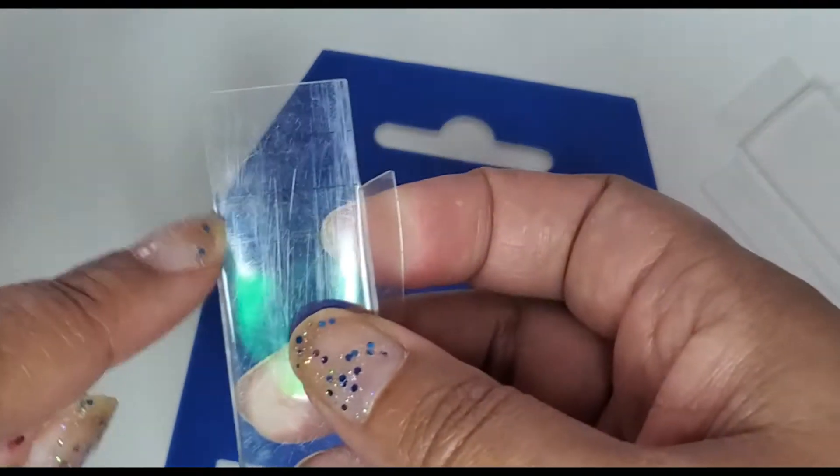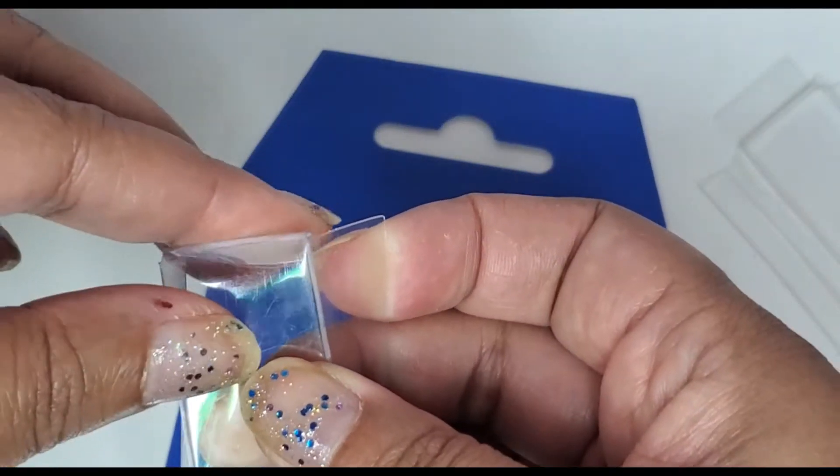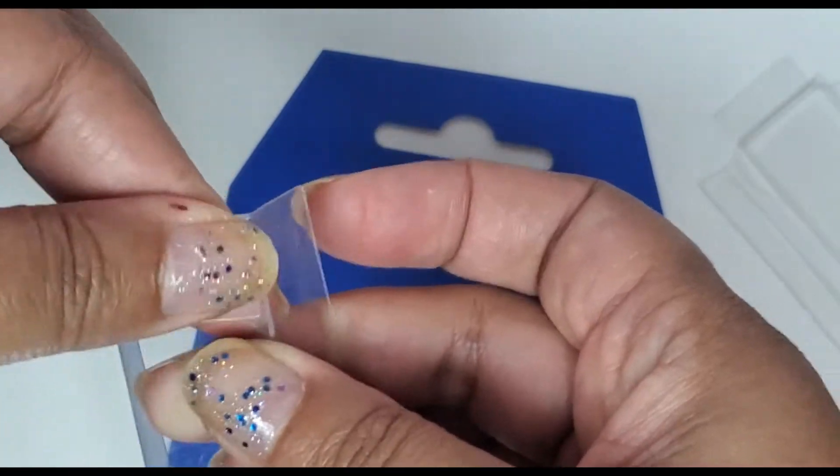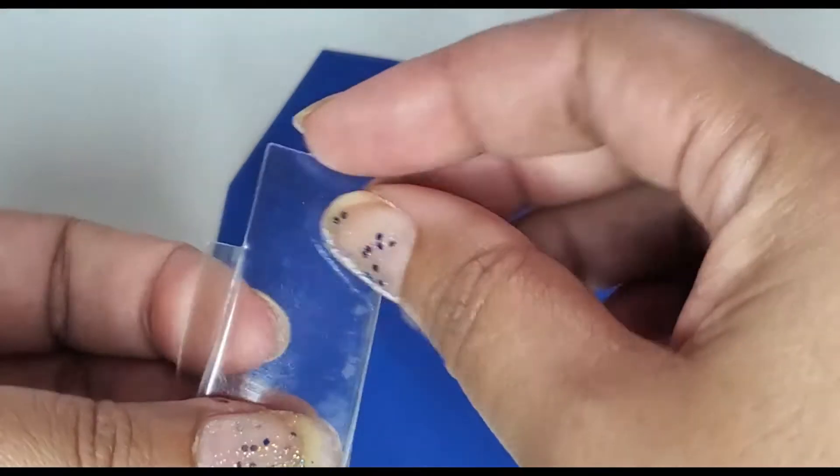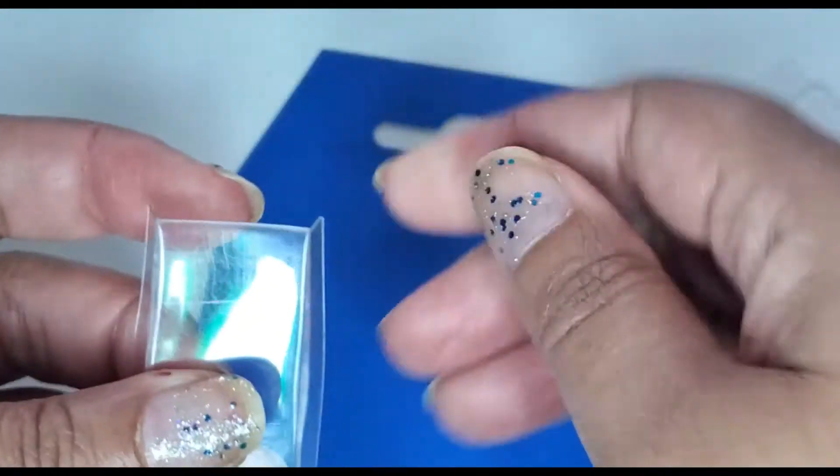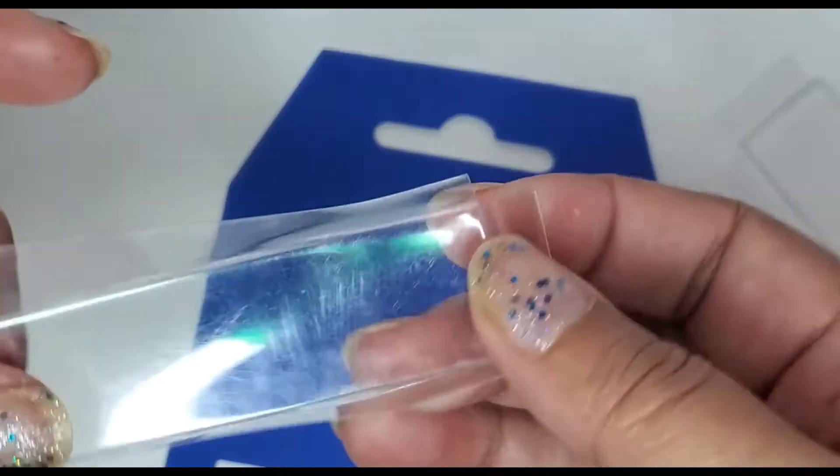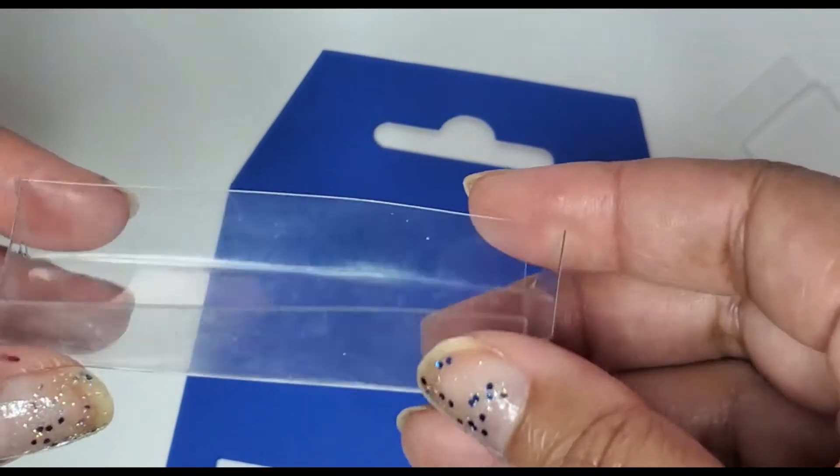Now you have the two flaps on the side. You'll do the same thing and where the edges are you will just fold down your piece of plastic and you'll do the same thing on this side. Then basically you have a box like this.